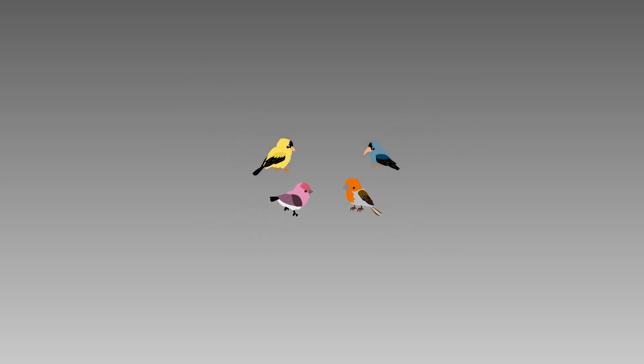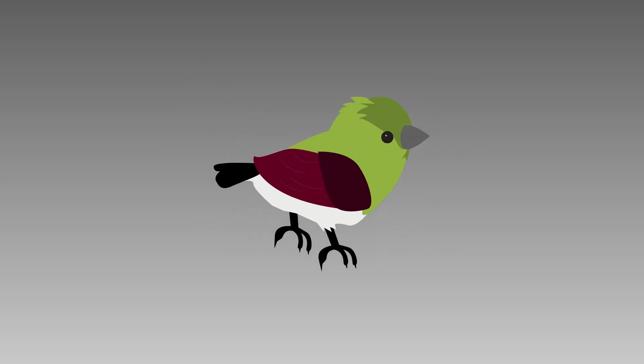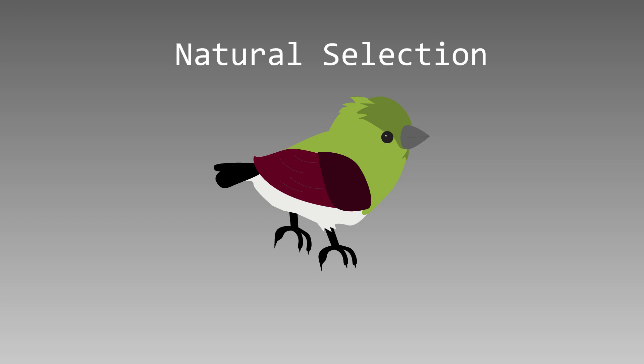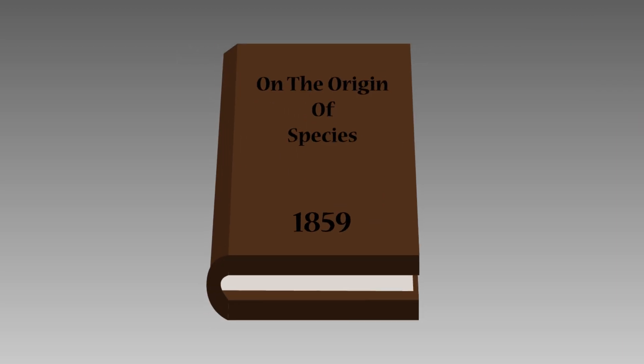From this, Darwin concluded that in nature all organisms compete with each other for resources in order to survive, and this competition between members of the same species is what makes organisms evolve. Only the best adapted organisms will survive the competition and reproduce. The others will die out. Darwin called this process natural selection and he published his ideas in a book called On the Origin of Species.